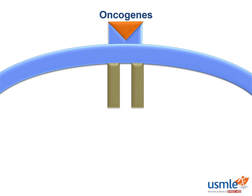Growth factor receptors transmit signals from growth factors to tell the cell that there needs to be some kind of growth. If you have a mutation in the receptors and you have more receptors, then as the growth factor attaches, you will have more signal transduction. The receptor associated with decreased prognosis in certain breast cancers — with a specific antibody that treats it — is ERB-B2, or HER2-neu.